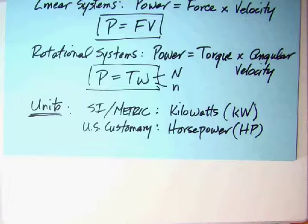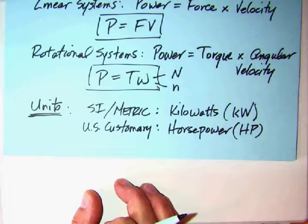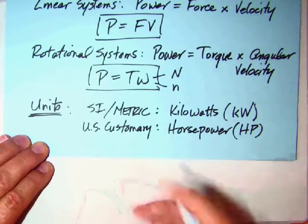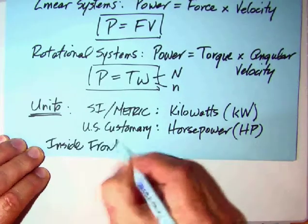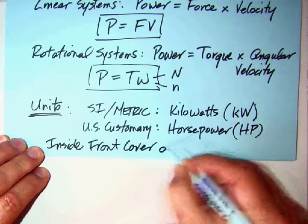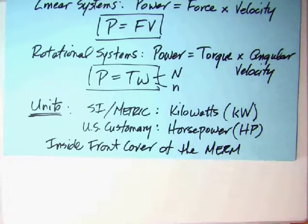The overall units for the SI metric is in kilowatts (kW). And the U.S. customary is in horsepower, typically. And there are conversions between those two if you need that, inside the front cover of the MERM. If you have kilowatts, multiply by this number to get horsepower. If you have horsepower, multiply by this number to get kilowatts. Basically, one kilowatt is slightly bigger than one horsepower.